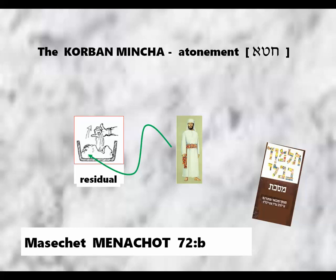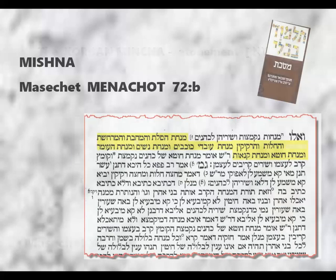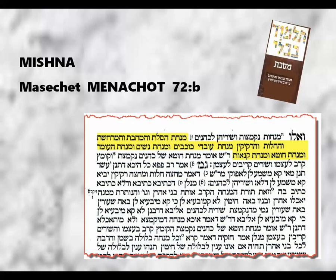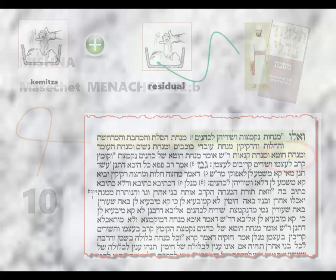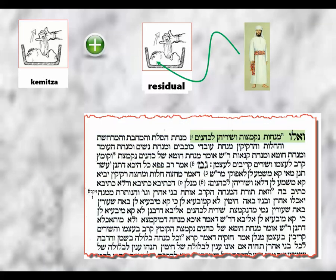The Gemara is built around a Mishnah that lists ten different subcategories of a Karban Mincha. Included in those ten subcategories is the Minchat Choteh — the Mincha offering brought by one who seeks Atonement for one's sins. Regarding these ten categories, the Mishnah states: Ve'elu menachot nikmatzot — the following ten categories of the Karban Mincha undergo a process of Khmitsa — and that V'shireihem l'Kohanim, the residual flour becomes the property of the Kohen.